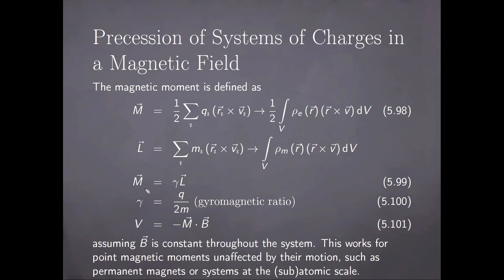In this case, we can say that the magnetic moment is proportional to the angular momentum of the system. The proportionality constant gamma is called the gyromagnetic ratio. This is the classical expression, which is the ratio between the charge and mass.